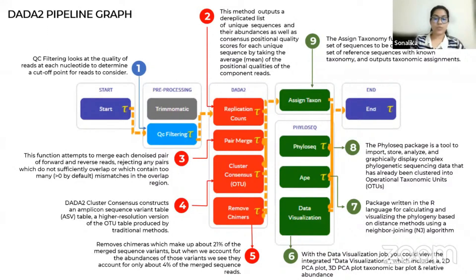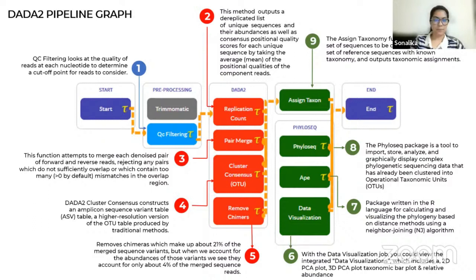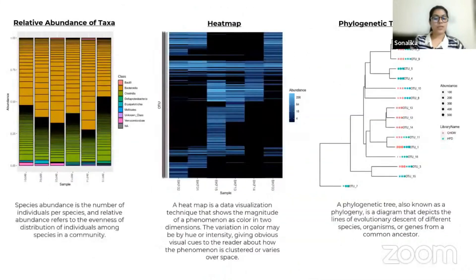DADA2 analysis will filter input data, dereplicate — providing abundances of unique sequence data — and produce an ASV table, a denoised high-resolution output file. The results obtained from the DADA2 pipeline include a microbial abundance taxonomy bar plot,